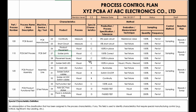The criticality ratings go A, B, C, D — where A is highly critical, B is very important, and so on down to D. These are process steps, and this last one is purely testing at the very end.